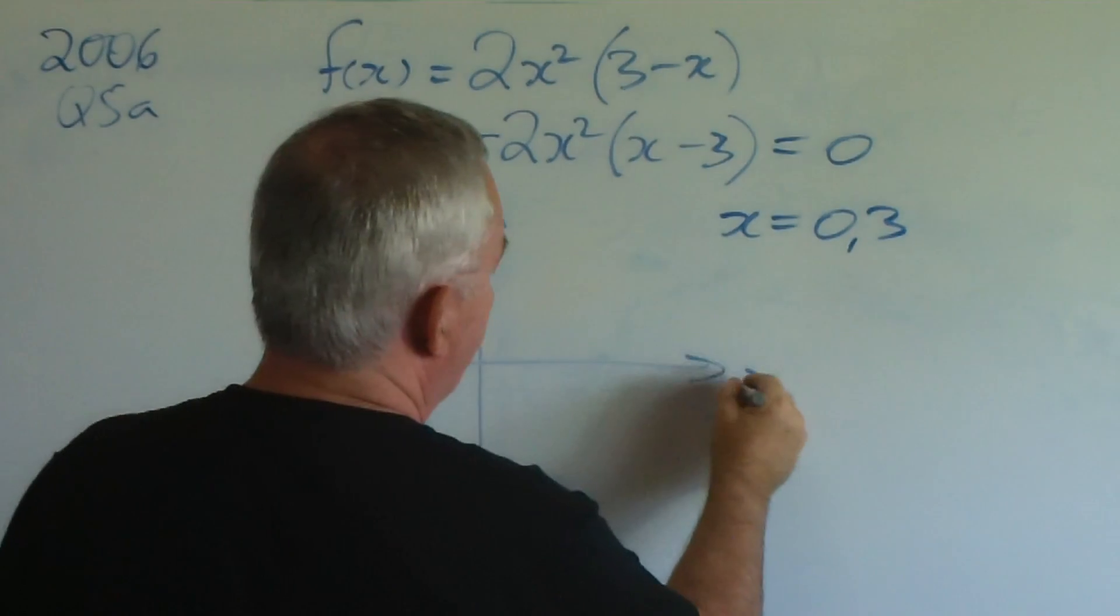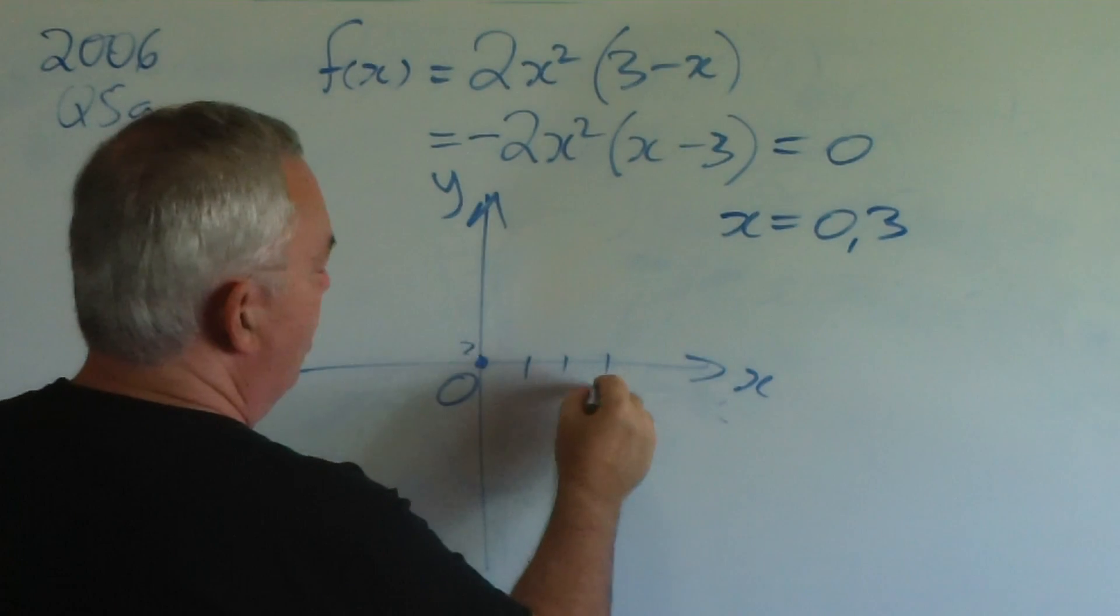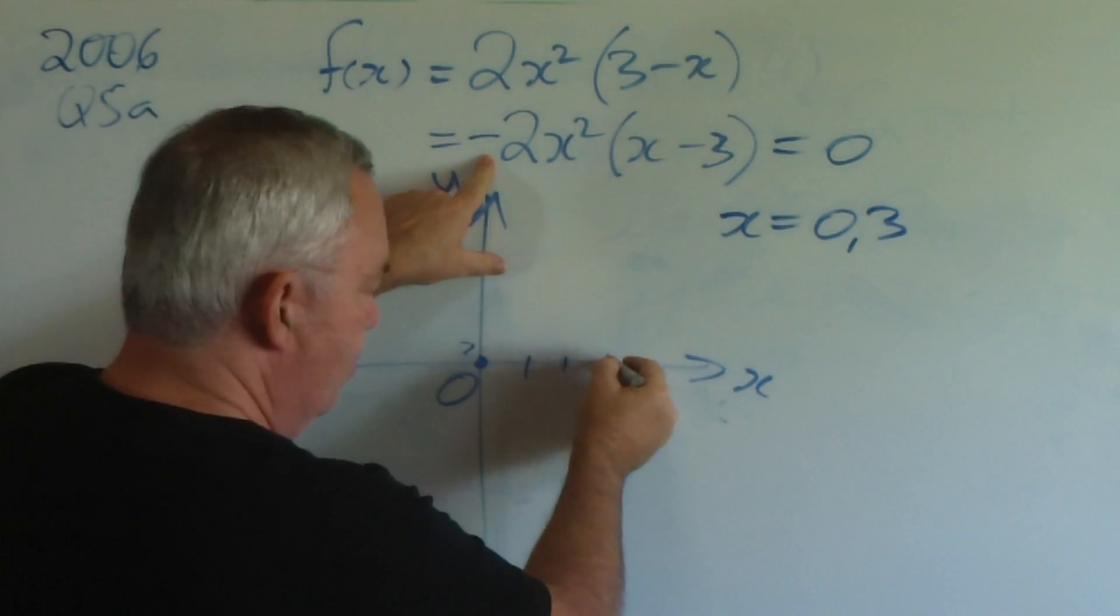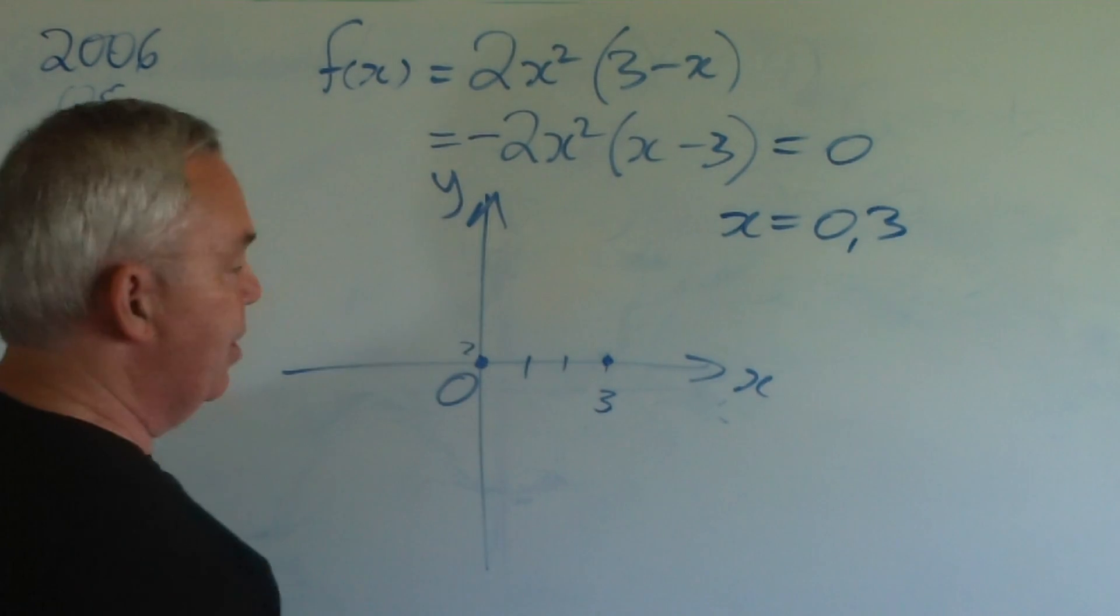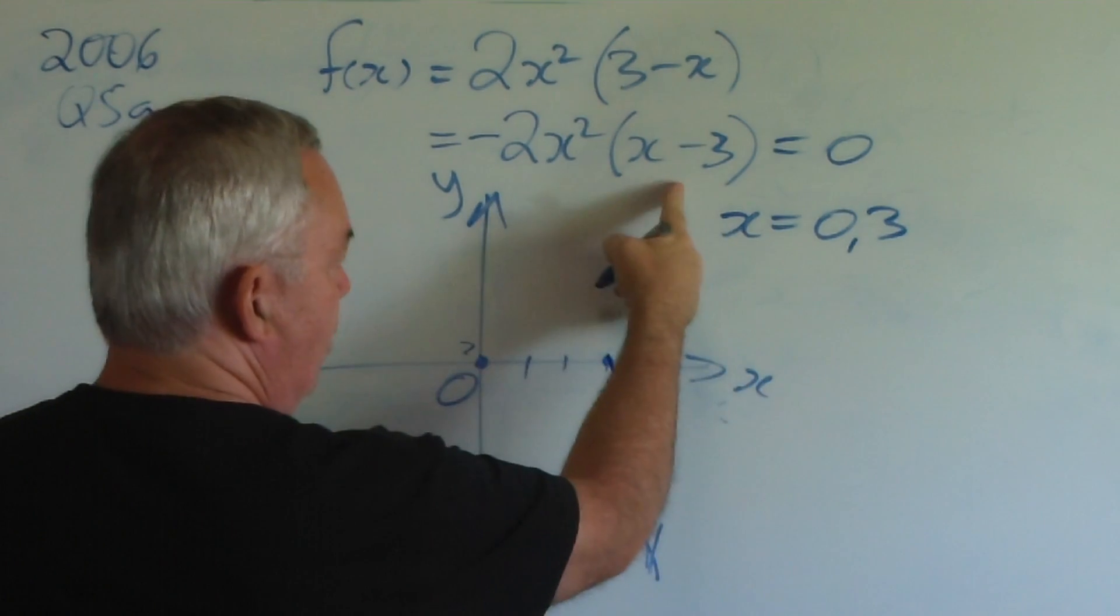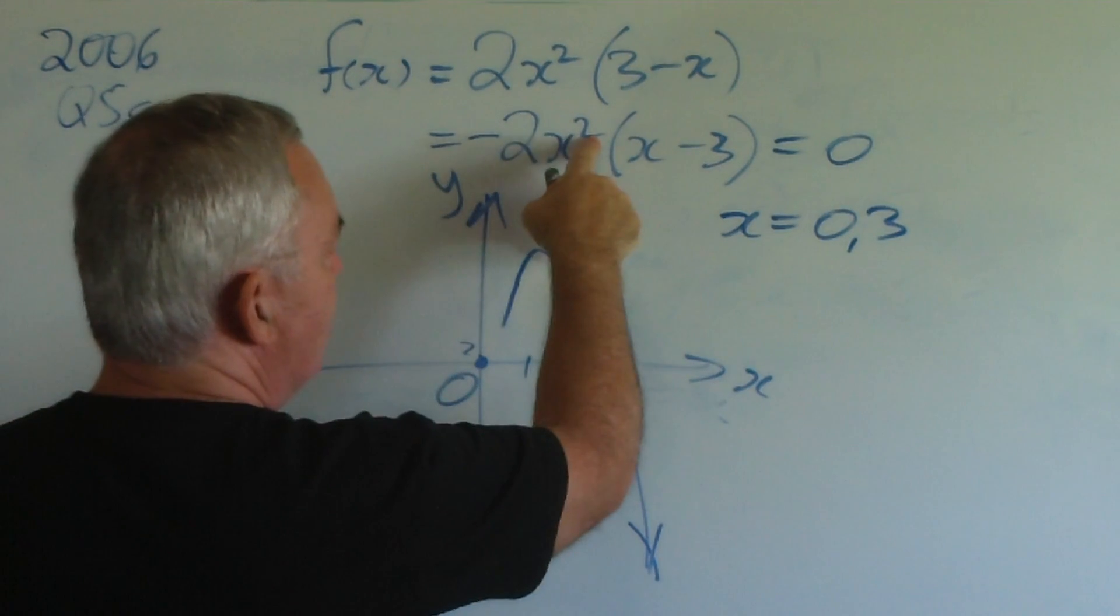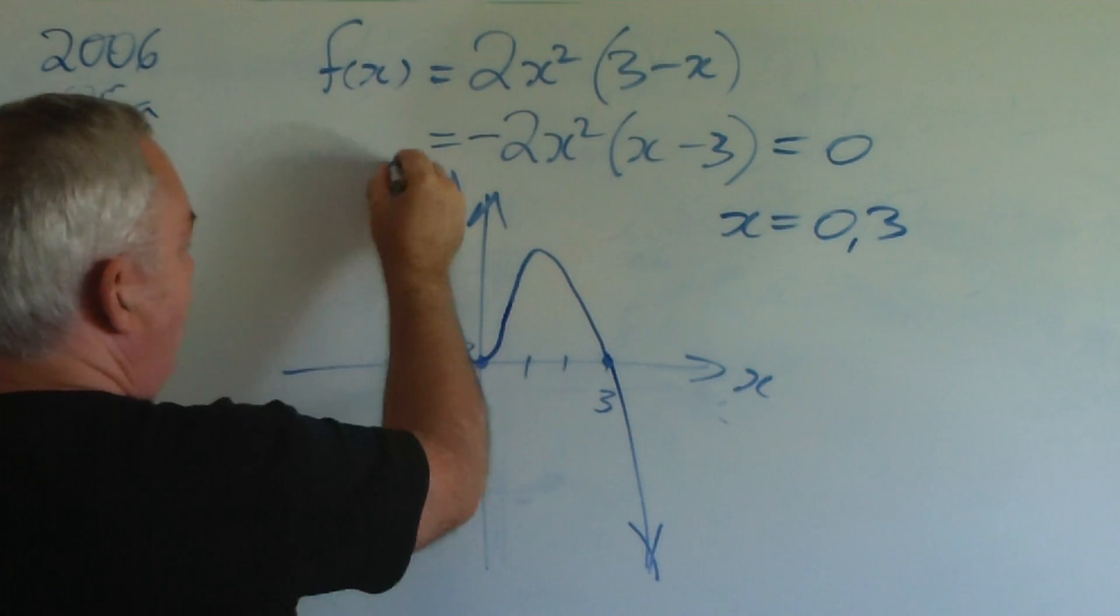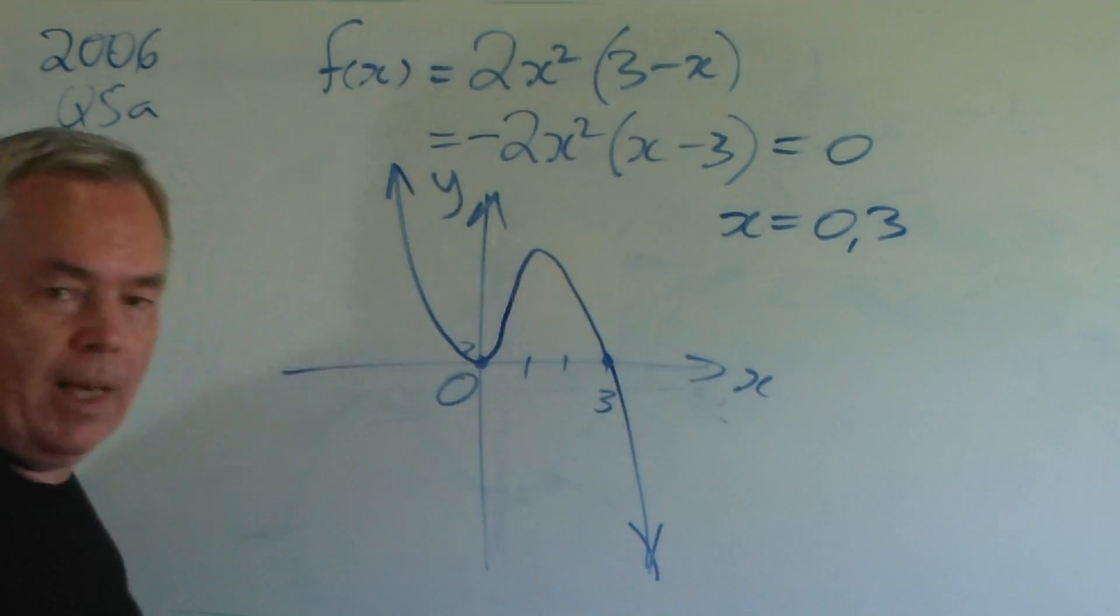So, let's see what this looks like. The root at zero is a double. The root at three is a normal root. But, because the leading coefficient is negative, the curve's going downwards as x increases. And, because there's a two, it's rather steep. Three is a normal root, so it passes straight through there. It comes down towards the zero root. And, because it's a double, it behaves like a parabola and bounces off. And that's the curve for the 2006 HSC paper.